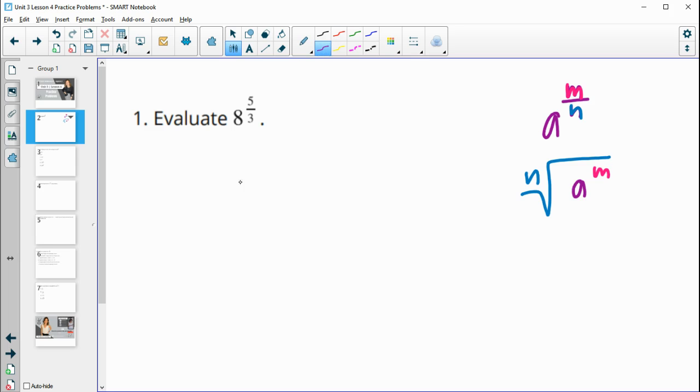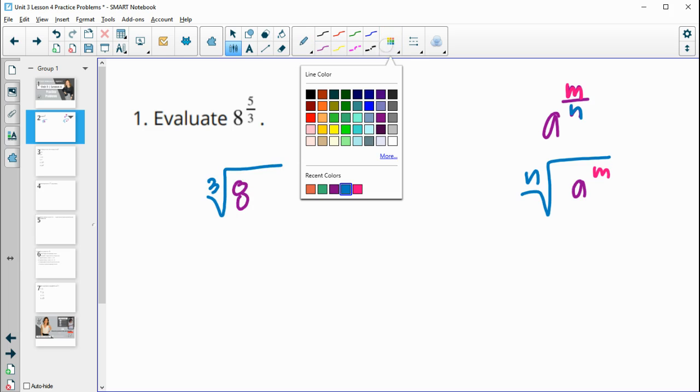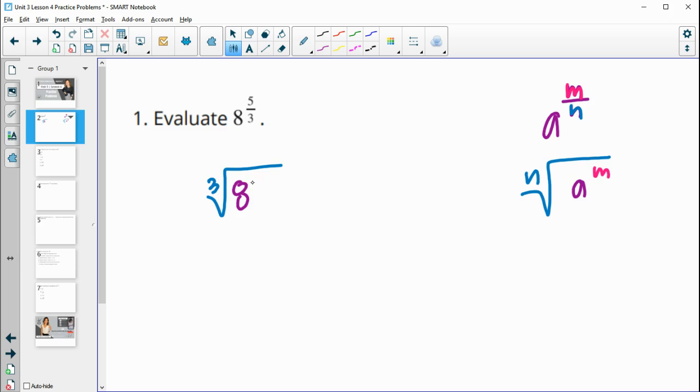So if we apply that here, we would have the cube root of eight to the fifth power. And then this five can actually go inside or outside of the radical, depending on what's easiest for us to evaluate.